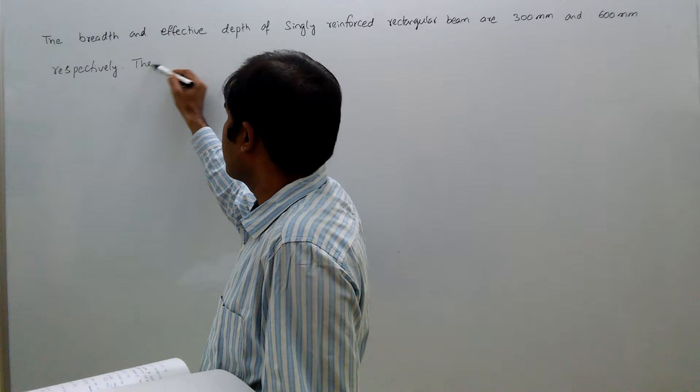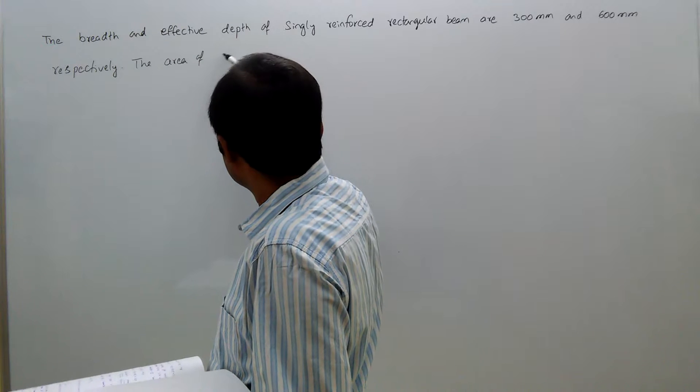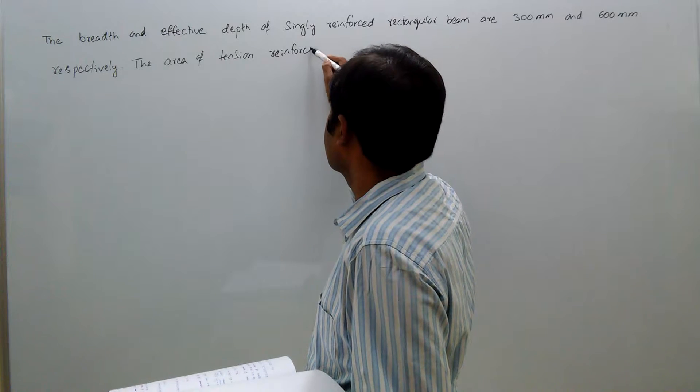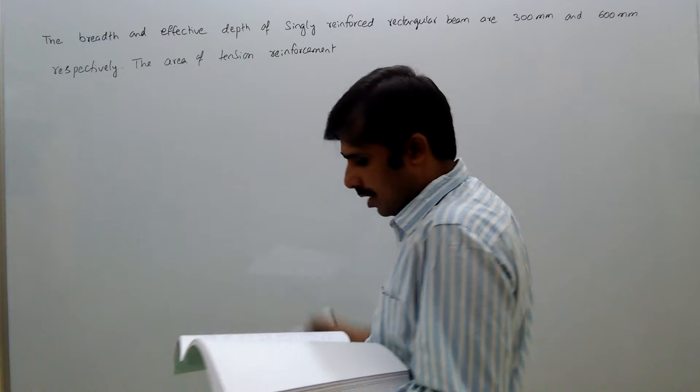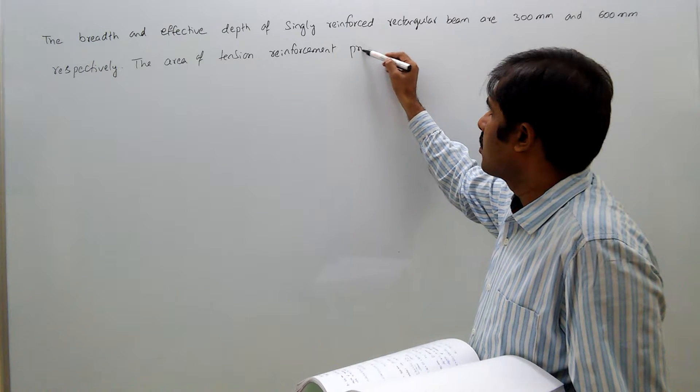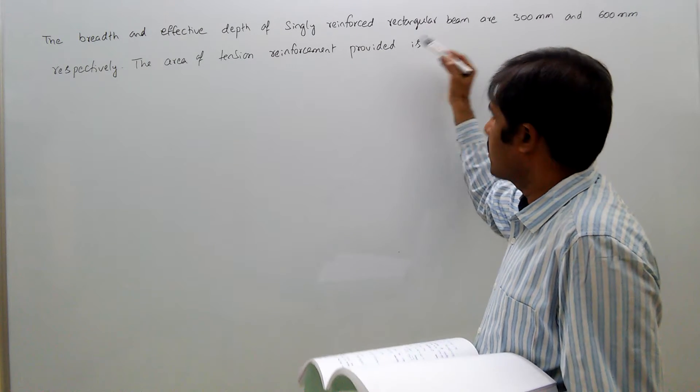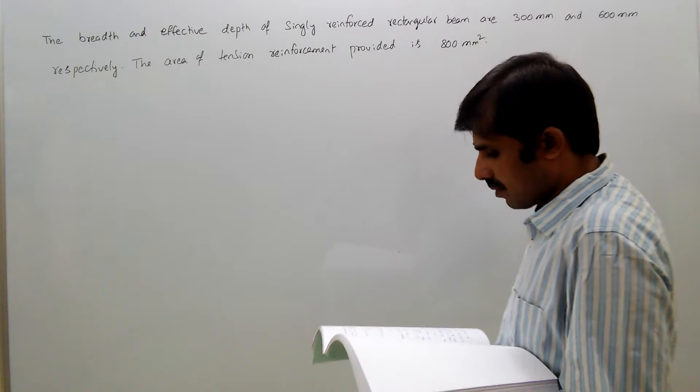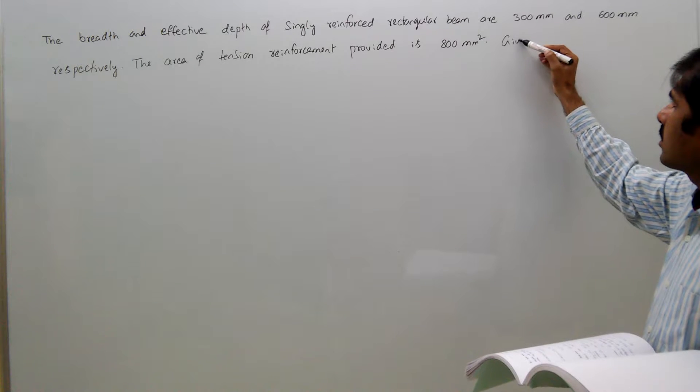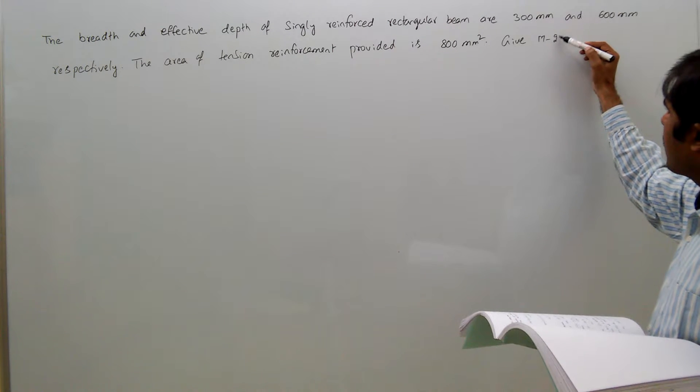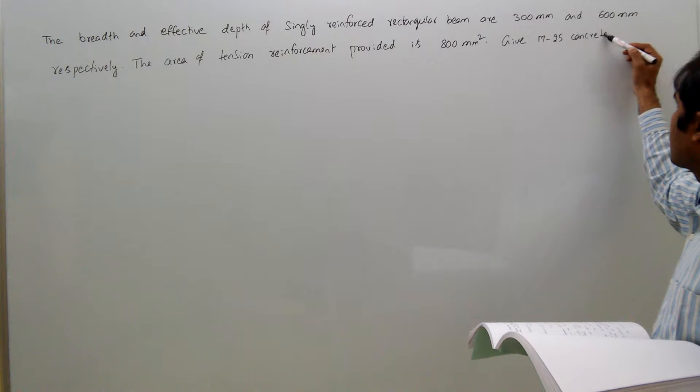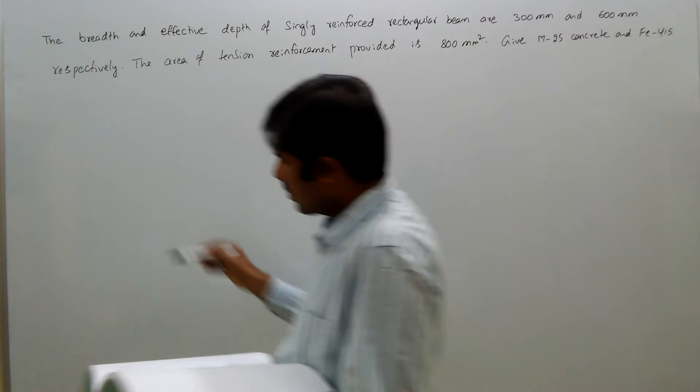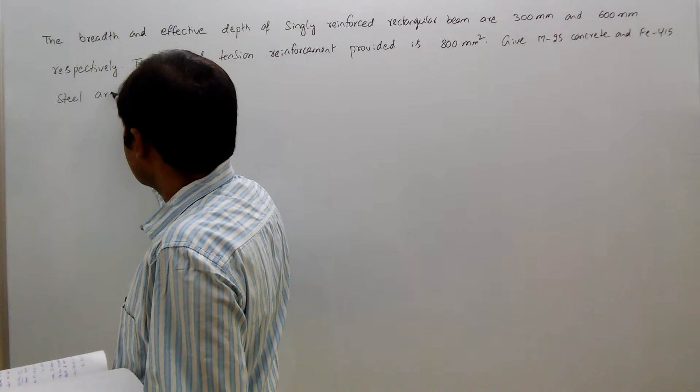The area of tension reinforcement provided is 800 mm² given M25 concrete and Fe415 steel are used.